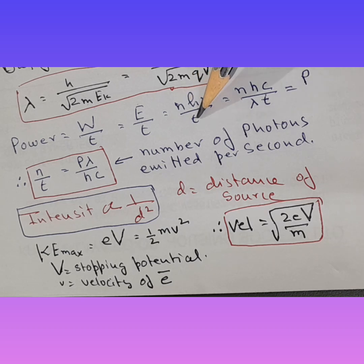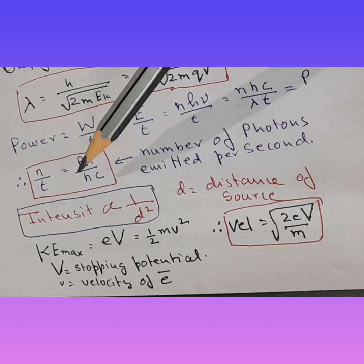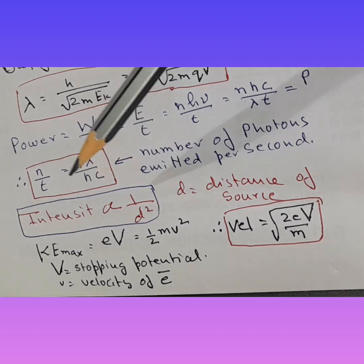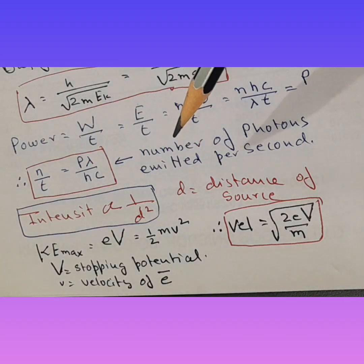So n h nu divided by t. Now nu, we also know it is c over lambda. So n h, n h, c over lambda and this is the t. So this becomes the formula for power. Now, if I want to find number of photons emitted per second, so n over t would remain here. Rest all would go along with power. So what happens is n and t remains there. So p lambda over hc becomes the formula for number of photons emitted per second.